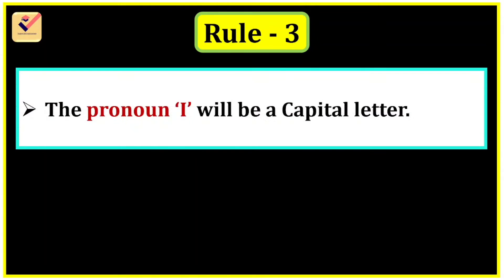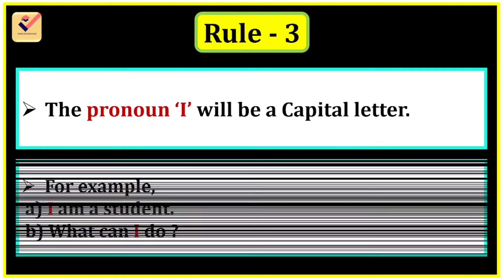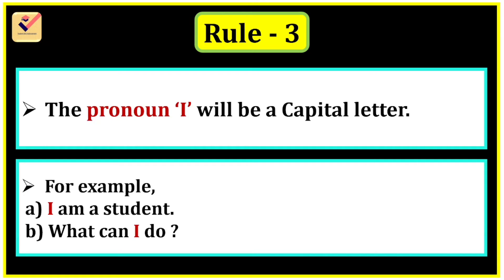Rule 3: The pronoun I will always be a capital letter. For example, "I am a student" — in this sentence, the pronoun I is a capital letter. "What can I do" — in this sentence, the pronoun I is in capital letter.